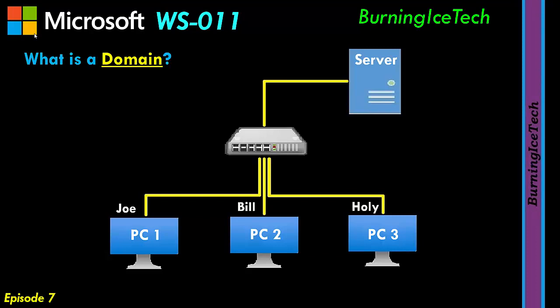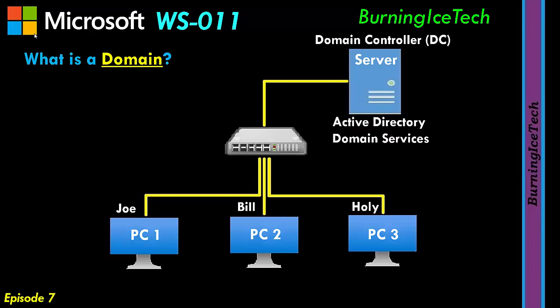This server is a domain controller — we just normally call it DC for short. On this domain controller server, we normally have Active Directory installed, more formally known as Active Directory Domain Services. We just normally call it Active Directory for short, or ADDS. This is a role you're going to have to install on a server — software you install on the server which allows you to manage all kinds of things regarding your network, including your user accounts and computers, which is what today's topic is about.